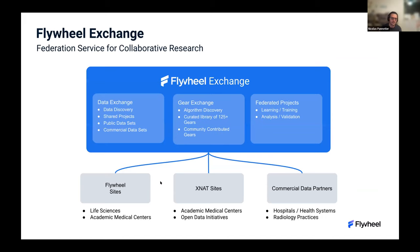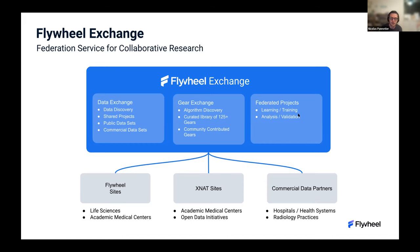The federation service as we envision it has multiple components. There is a data exchange part where sites are able to publish their data sources in a centralized place and make them accessible to potential collaborators. There is also a part about gears — principles of algorithm discovery. Through the Flywheel platform, we have access to a suite of 100-plus different processing algorithms that can be run on these different data sources, so you can create federated projects from a variety of data sources curated in the same way, aggregated and leveraged for any type of application.